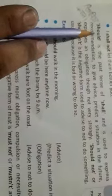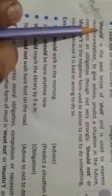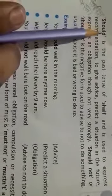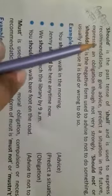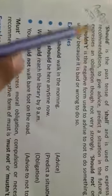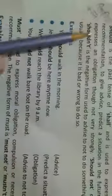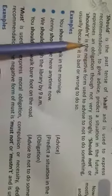Next is 'should'. Just as 'will' has past form 'would', 'shall' has past form 'should'. In Hindi its meaning is 'chahiye'. We use 'should' for recommendations, giving advice, expressing future situations, and expressing obligation — when we talk about our duty.